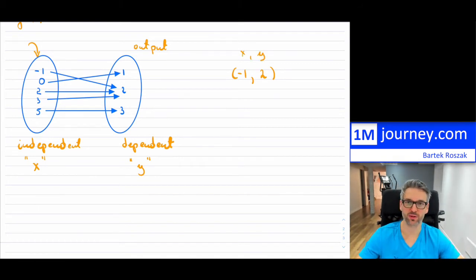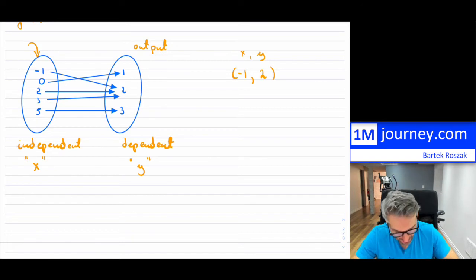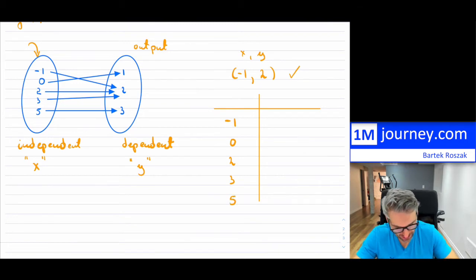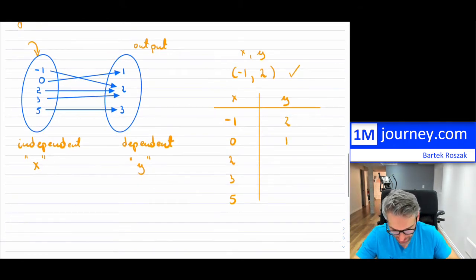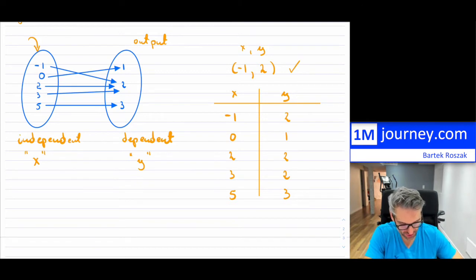You can also write these out as ordered pairs, or as a table of values, which is often done. So x has negative 1, 0, 2, 3, and 5. The output y gives: negative 1 maps to 2, 0 maps to 1, 2 maps to 2, 3 maps to 2, and 5 maps to 3. That's a numerical way of representing this relation. Now, is it a function? We have to refresh: for every single input, it must have a unique output.